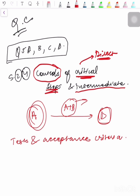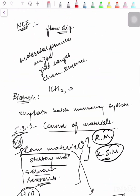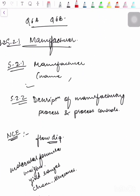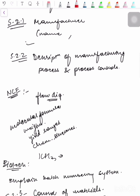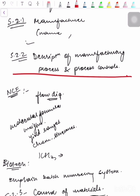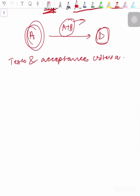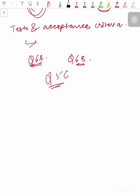Tests and acceptance criteria with justification, including experimental data, should be provided for critical steps identified in section 3.2.S.2.2 of the manufacturing process description. The acceptance criteria ensure that the process is controlled and should be mentioned in this subsection. Information on the quality and control of intermediates isolated during the process should also be provided, referencing ICH guidelines Q6A and Q6B, as well as ICH Q5C.